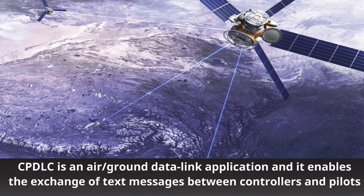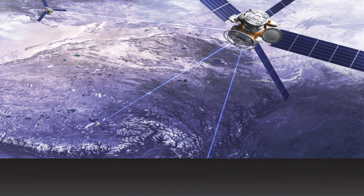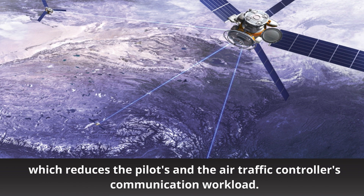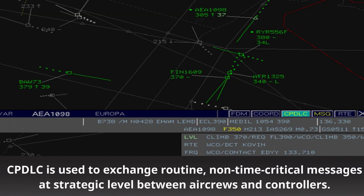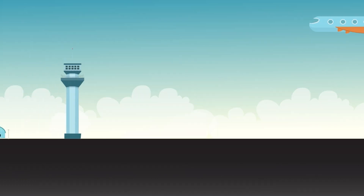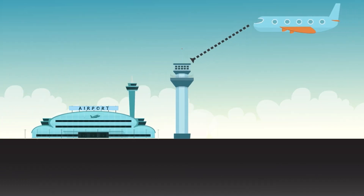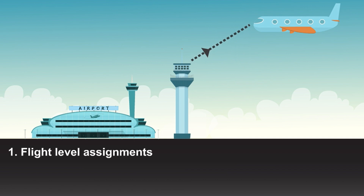CPDLC is an air-to-ground data link application that enables the exchange of text messages between controllers and pilots, which reduces communication workload for both pilots and air traffic controllers. CPDLC is used to exchange routine and non-time-critical messages at a strategic level between aircrews and controllers. Using CPDLC, controllers can issue ATC clearances like flight level assignments, lateral deviations or vectoring, and speed assignments.